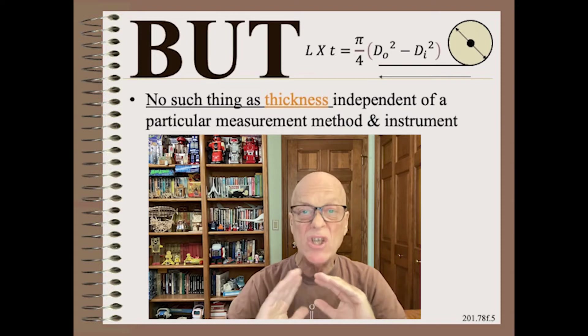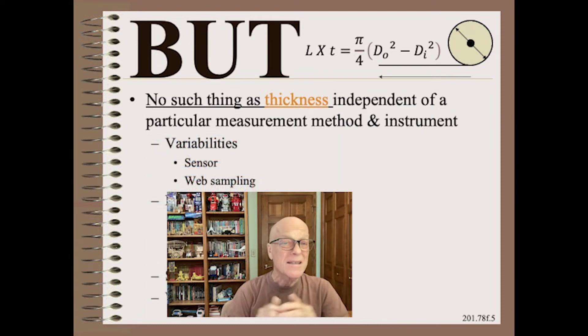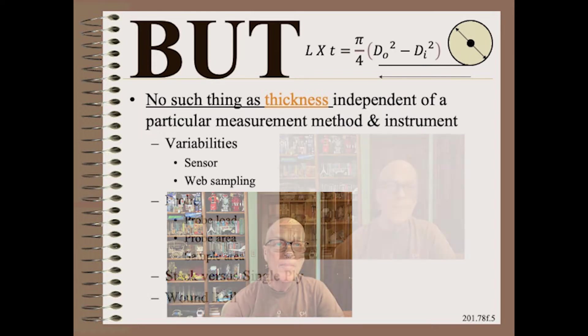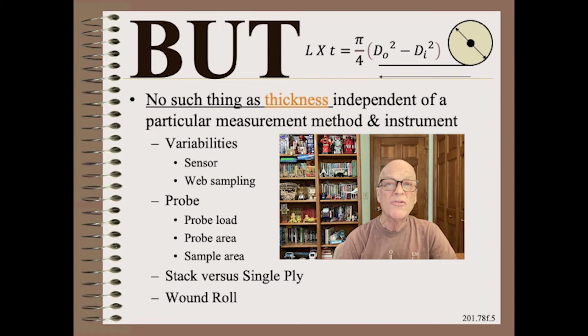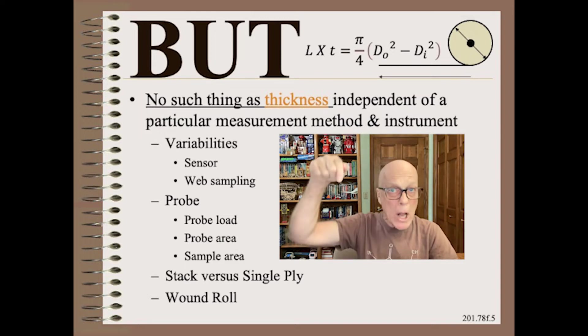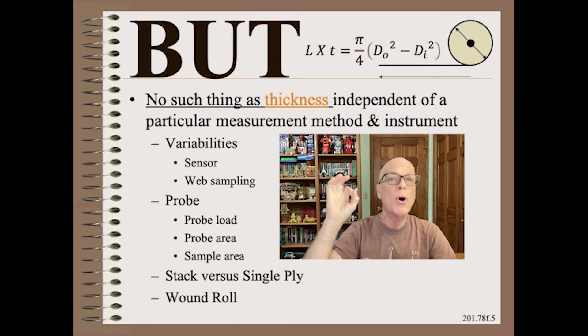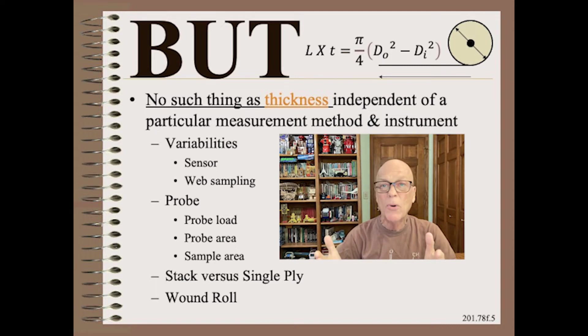Thickness is not like that. Yes, there are many variabilities in sensor resolution and sampling, but that's not what my big concern is. Rather, different instruments use different probe loads and have different probe areas, and the size of the probe may be bigger or smaller than the sample. Worse yet, a stack thickness will measure different than a single ply thickness, and a wound roll effective thickness will be different still.